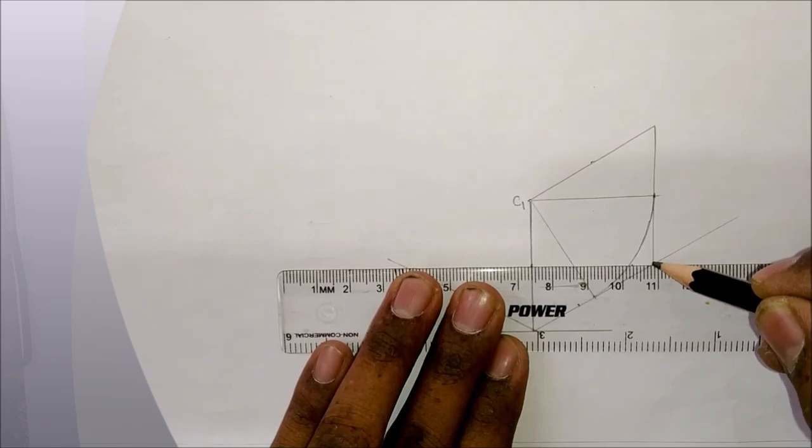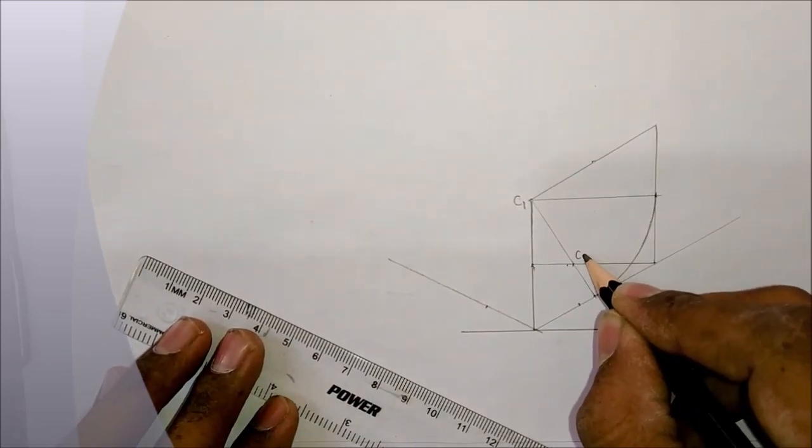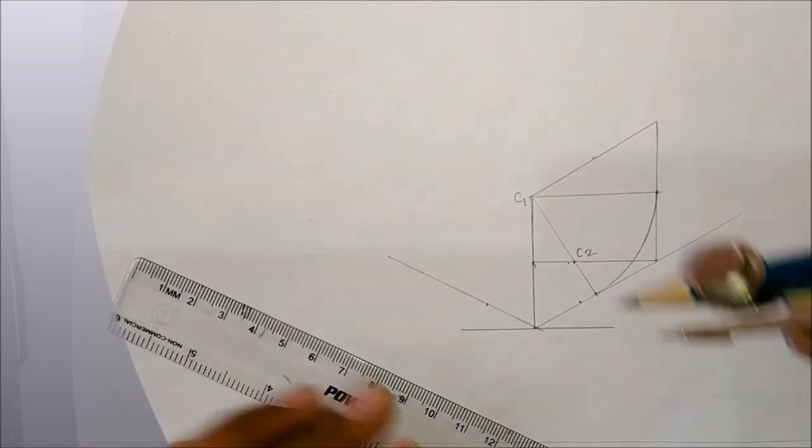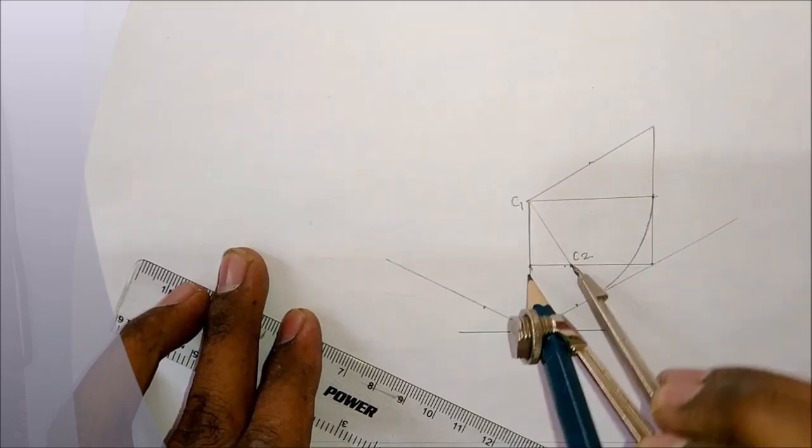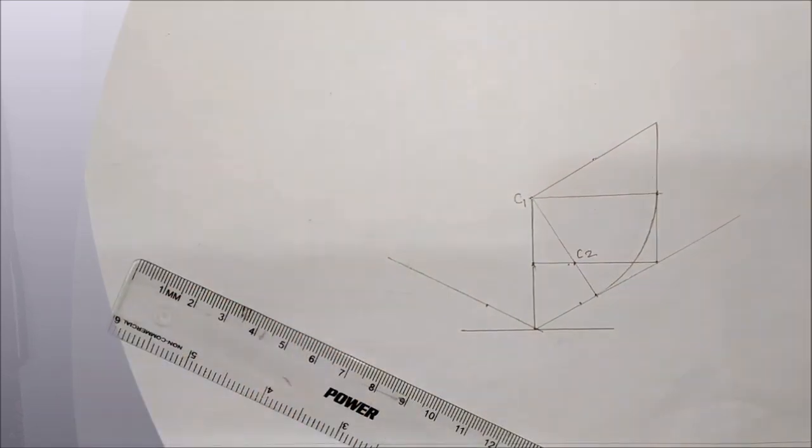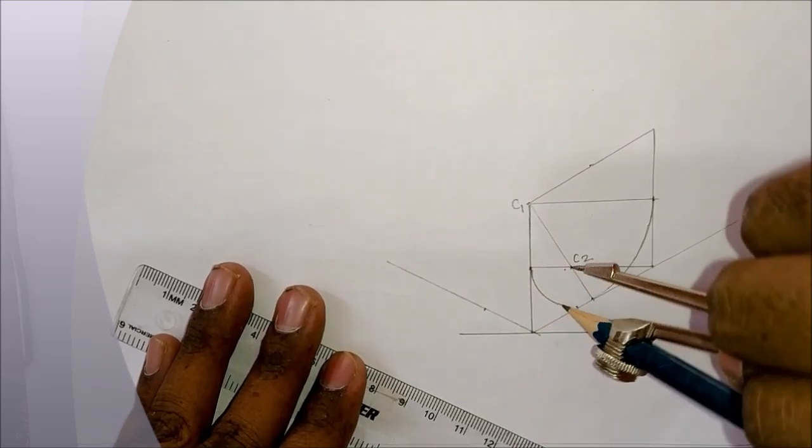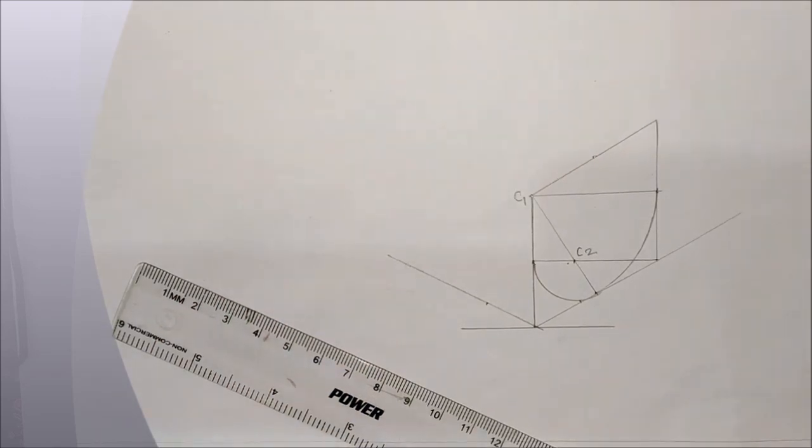Then we have to find next center. For that we have to join opposite diagonal point with the opposite midpoint. Now with C2 center we have to draw one more arc. And we will get the complete semicircle now. So this is the method how to draw the isosemicircle.